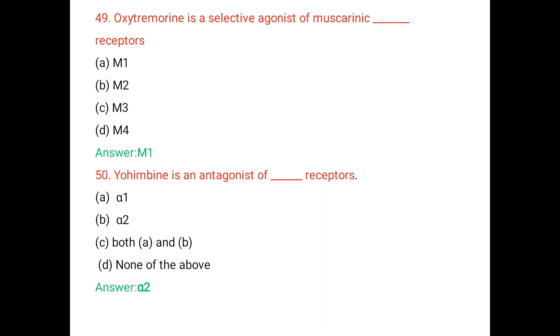Question number 50. Yohimbine is an antagonist of receptors: A. Alpha 1, B. Alpha 2, C. Both A and B, D. None of the above. The right answer is Alpha 2 receptor.